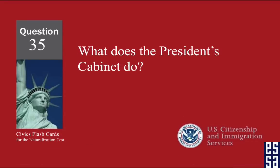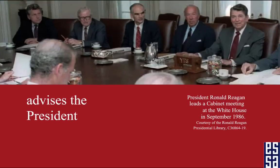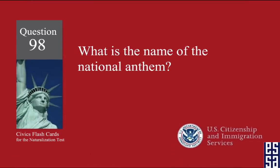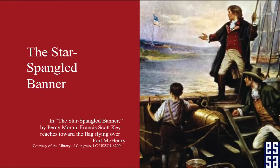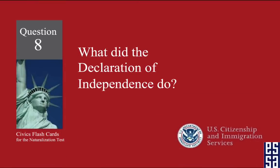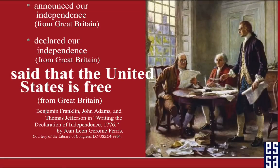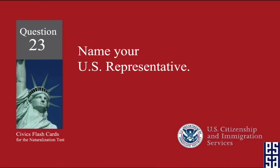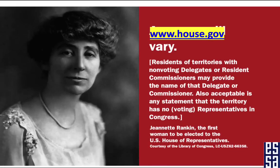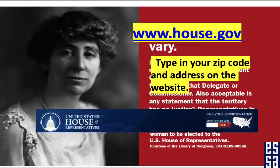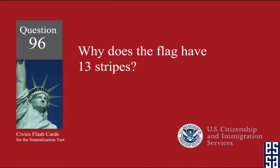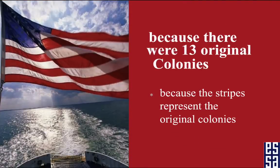What does the president's cabinet do? Advises the president. What is the name of the national anthem? The Star Spangled Banner. What did the Declaration of Independence do? It said that the United States is free. Name your U.S. representative. You need to go to house.gov to find your representative. Why does the flag have 13 stripes? Because there were 13 original colonies.